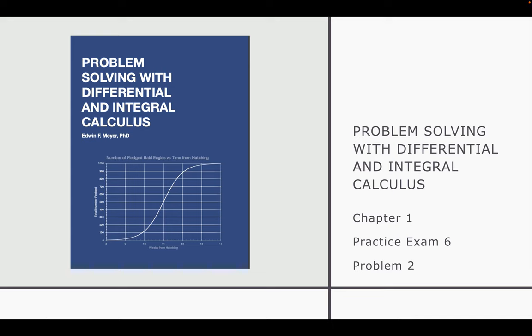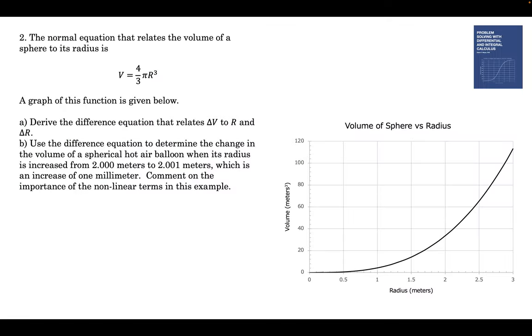This is problem 2 on practice exam 6 of chapter 1 in the book Problem Solving with Differential and Integral Calculus. We have the normal equation that relates the volume of a sphere to its radius: V is 4 thirds pi r cubed.